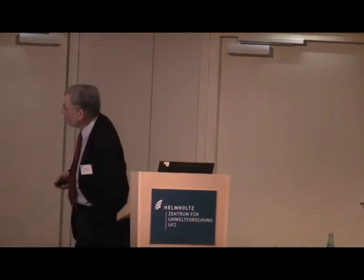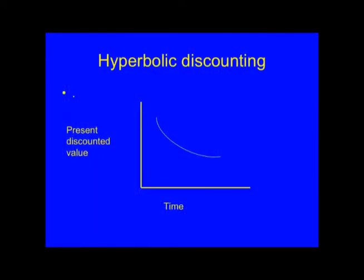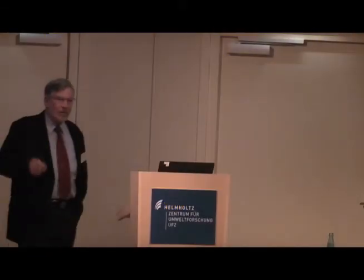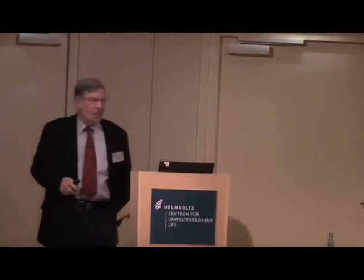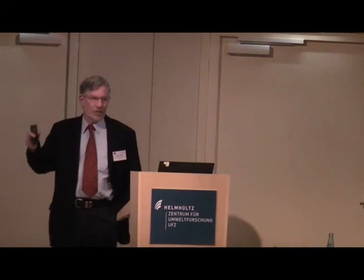These are my homemade PowerPoint slides. Hyperbolic discounting looks like this: the value loses a lot at the beginning period, but then it levels off. So something loses a lot of value between, say, the first and second year, but not much between the 49th year and the 50th year.